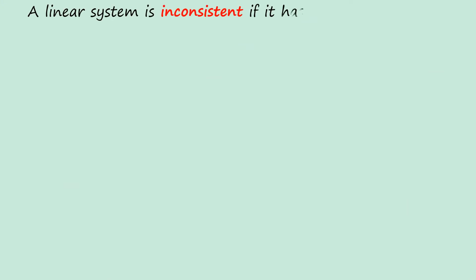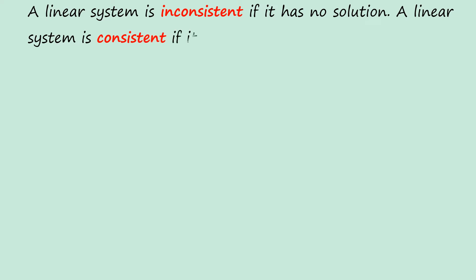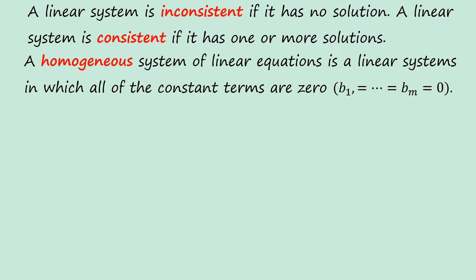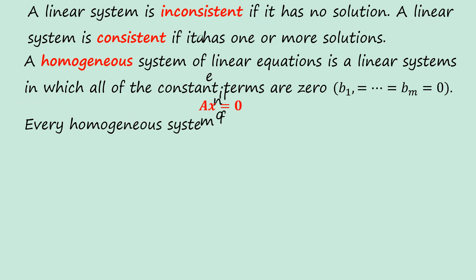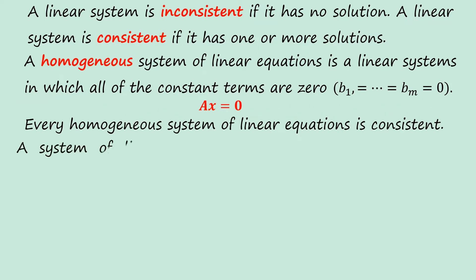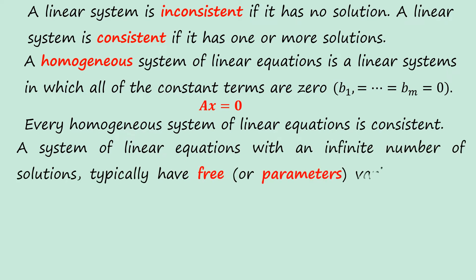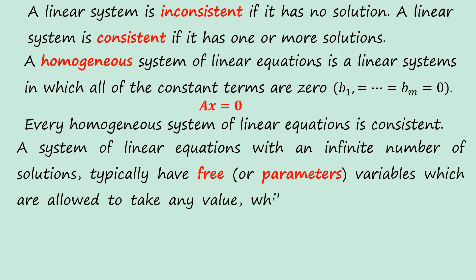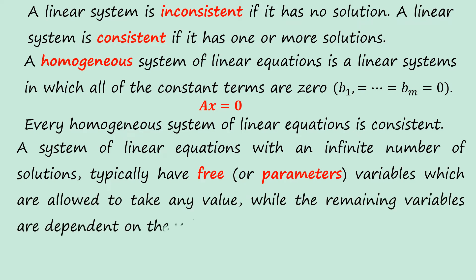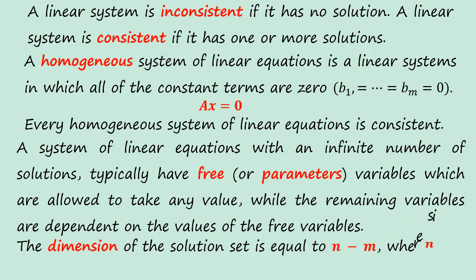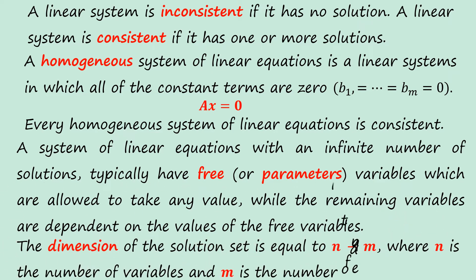A linear system is inconsistent if it has no solution. A linear system is consistent if it has one or more solutions. A homogeneous system of linear equations is a linear system in which all constant terms are zero, that is, Ax equals zero. Every homogeneous system of linear equations is consistent. A system with infinitely many solutions typically has free variables which can take any value, while the remaining variables depend on them. The dimension of the solution set equals n minus m, where n is the number of variables and m is the number of equations.